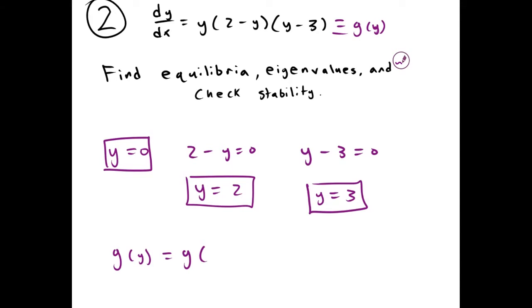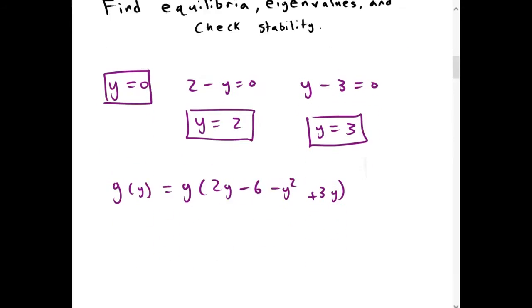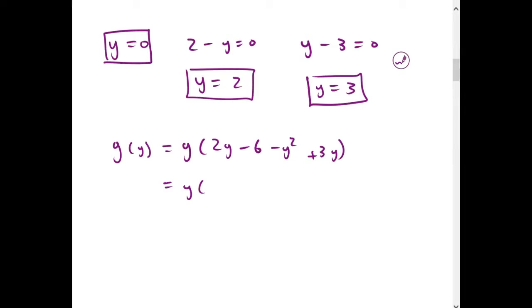So we have 2y. We're going to use FOIL. Minus 6 minus y² plus 3y. And that will equal y times (5y - 6 - y²). Multiply the y through, we get -y³ + 5y² - 6y.